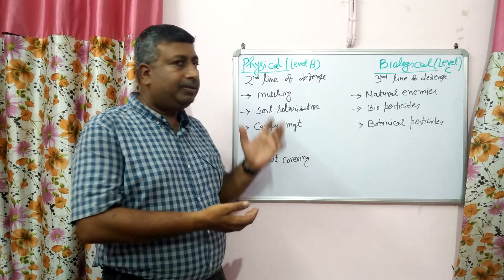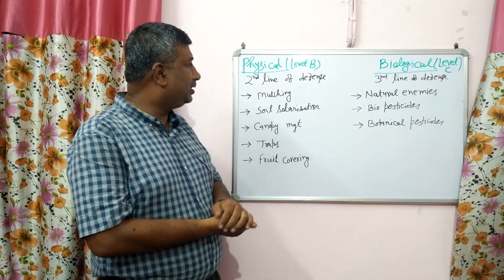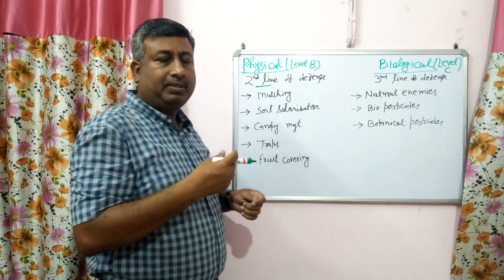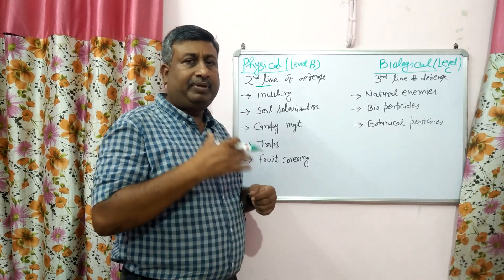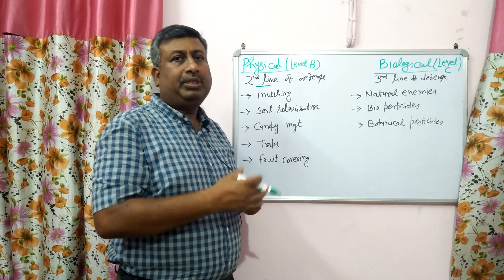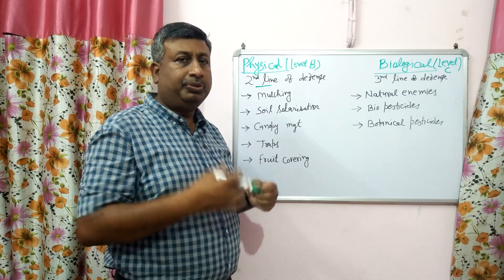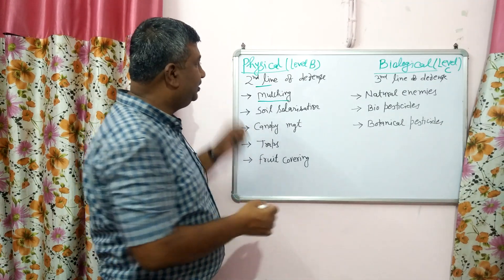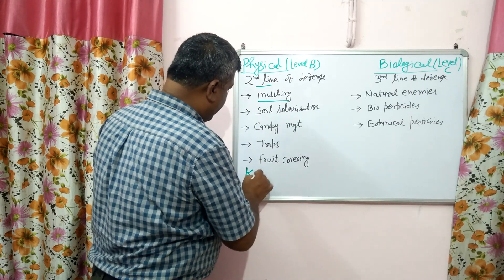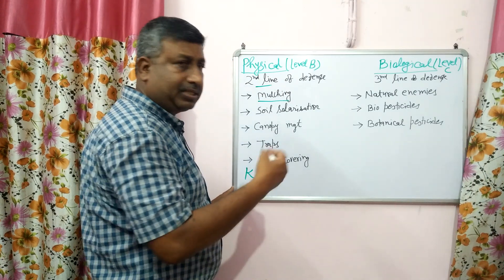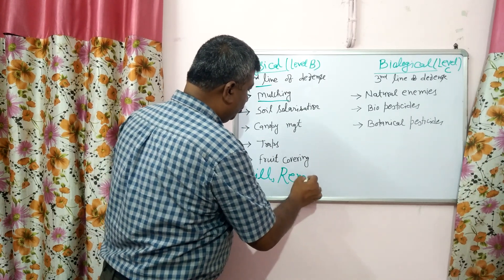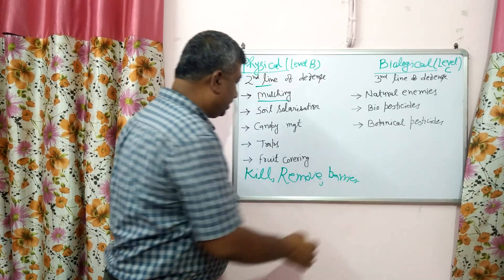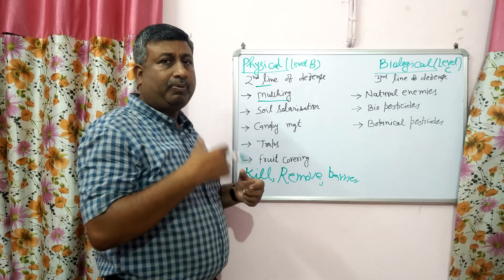Physical methods — Label B methods — are considered as a second line of defense. The first line of defense or preventive methods means cultural methods. If preventive methods are not sufficient to check the insect, then second line defense methods are used. These physical methods are used to kill the insect pest, to remove them, or to act as a physical barrier.